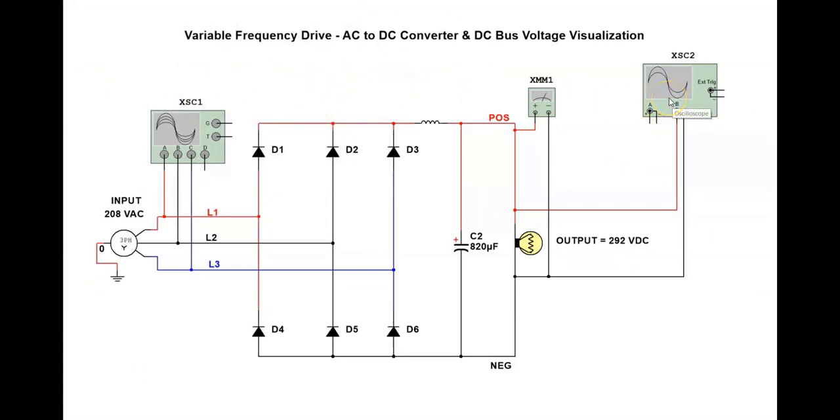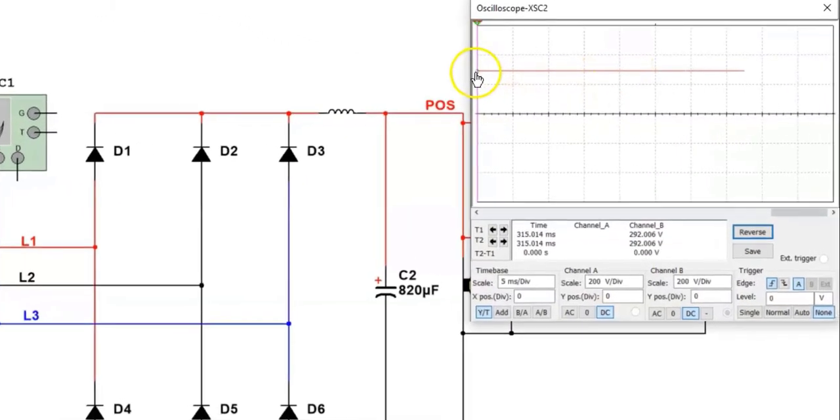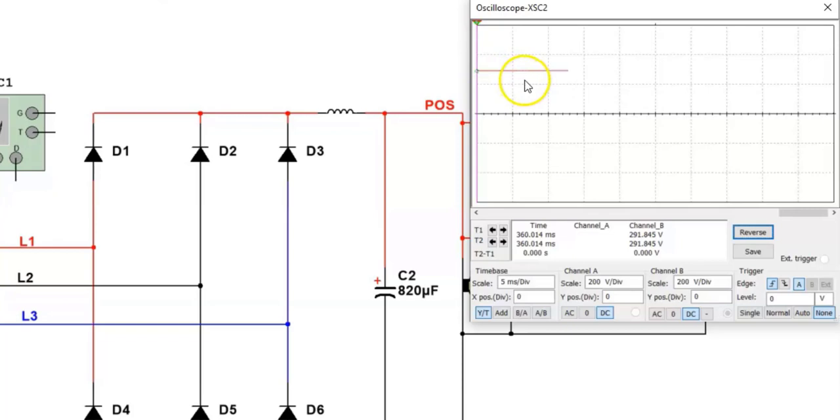On the output side I have an oscilloscope connected across the lamp and you can see a nice beautiful red straight line. The DC level is the measurement from this zero line where my mouse is up to that red line.